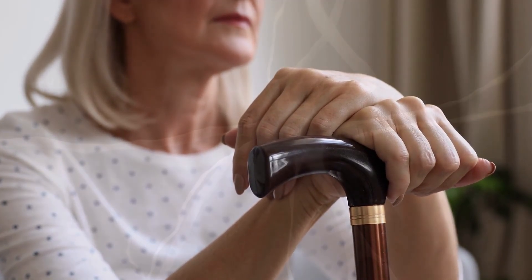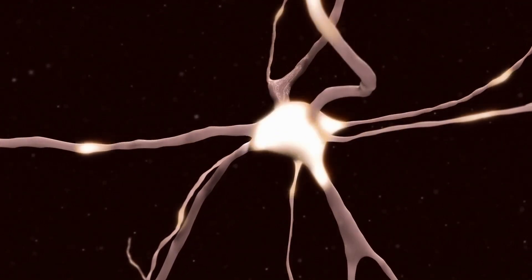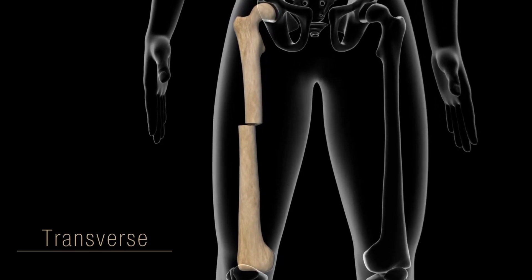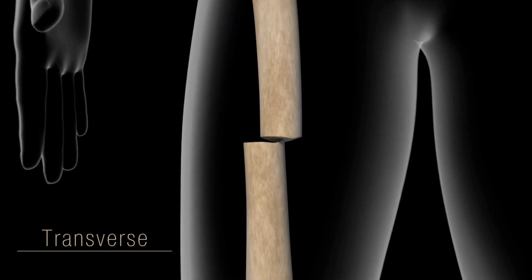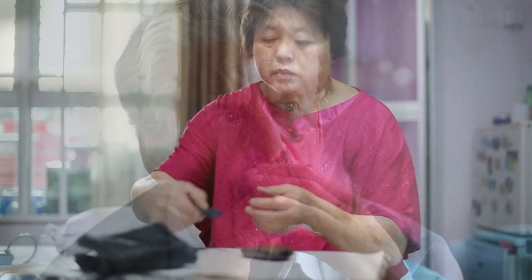Diabetic complications such as nerve damage, muscular weakness, periods of low blood sugar, and visual problems can all increase the likelihood of falling and breaking a bone. Number seven: memory loss. Memory loss and problems with thinking in general are both signs of Alzheimer's disease, and type 2 diabetes may be linked to these problems.